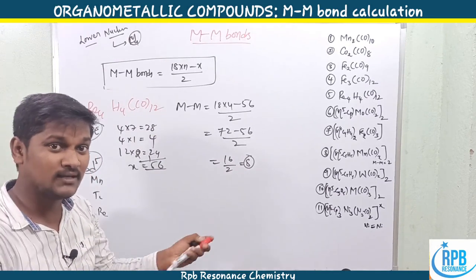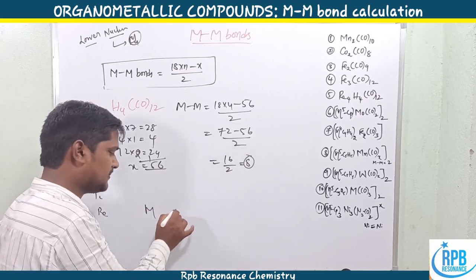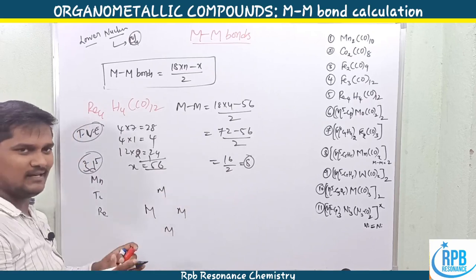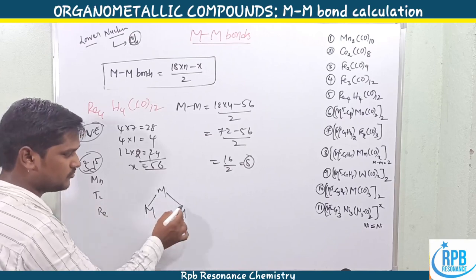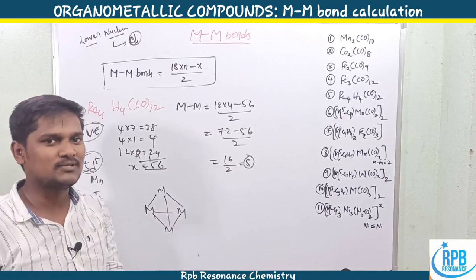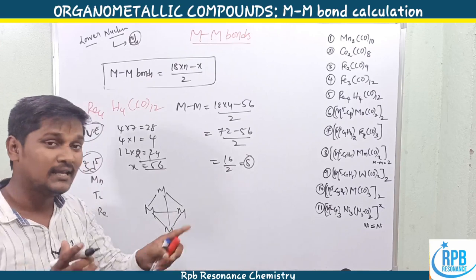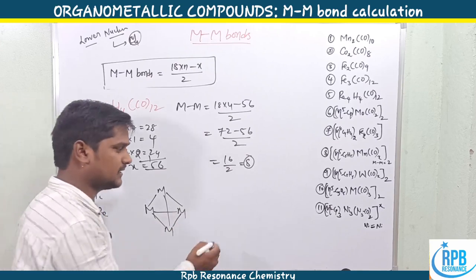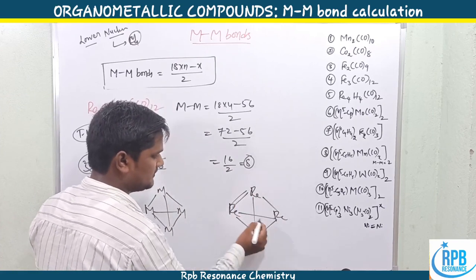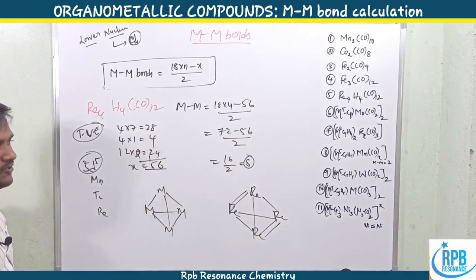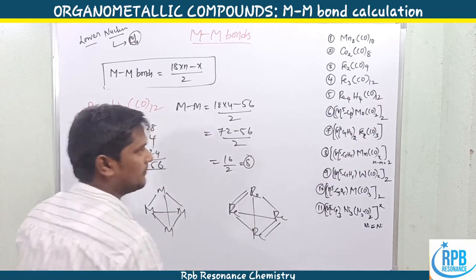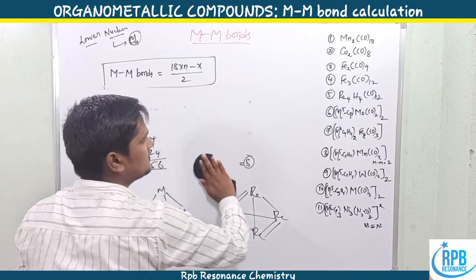Metal-metal bonds for Ru₄H₄(CO)₁₂ = (18×4 − 56) / 2 = (72 − 56) / 2 = 16/2 = 8. Eight metal-metal bonds are observed. For a tetranuclear complex, a typical tetrahedral arrangement gives 6 metal-metal bonds, but here we get 8. This means there are two double metal-metal bonds in the structure, giving a unique arrangement of Ru₄ with 6 single bonds plus 2 double bonds.